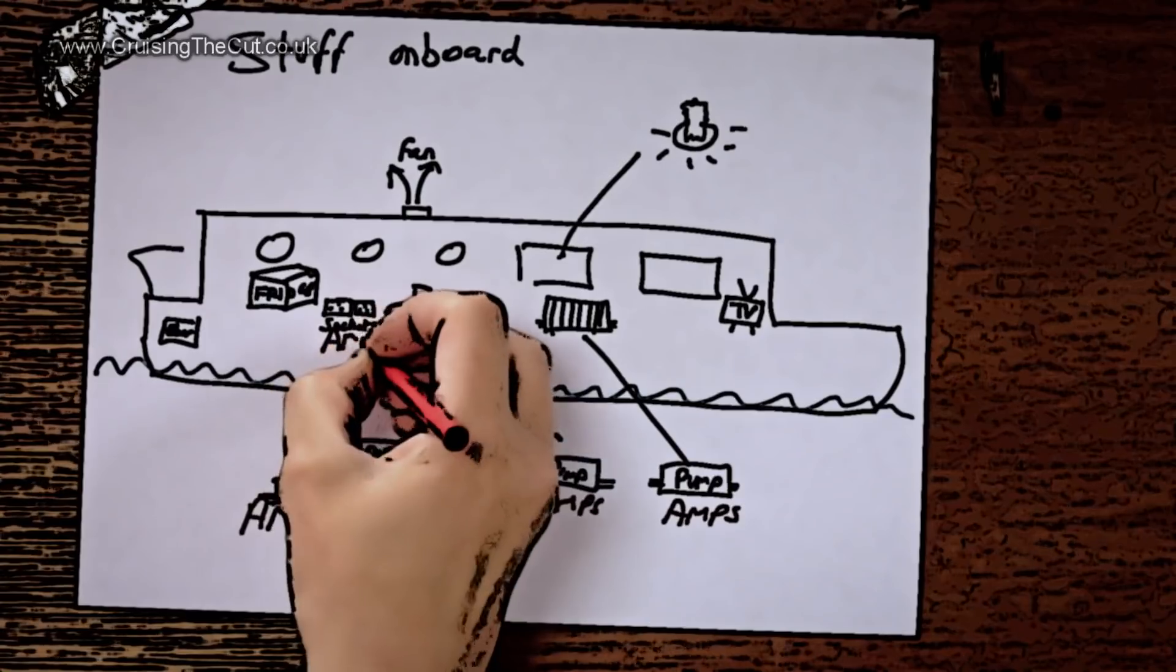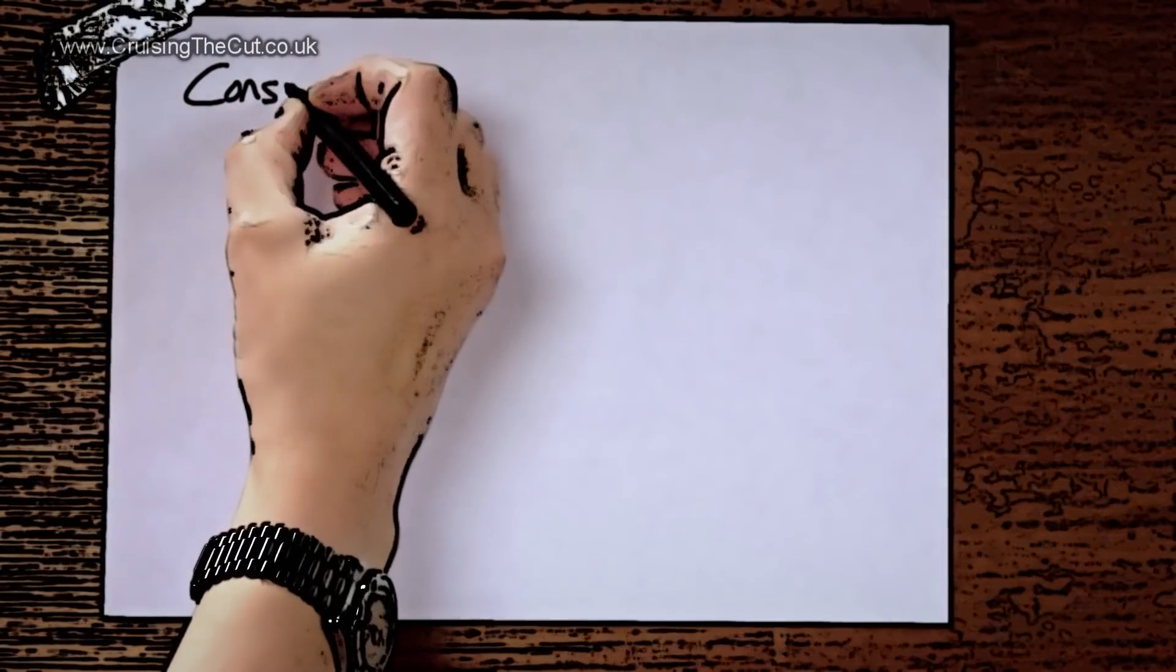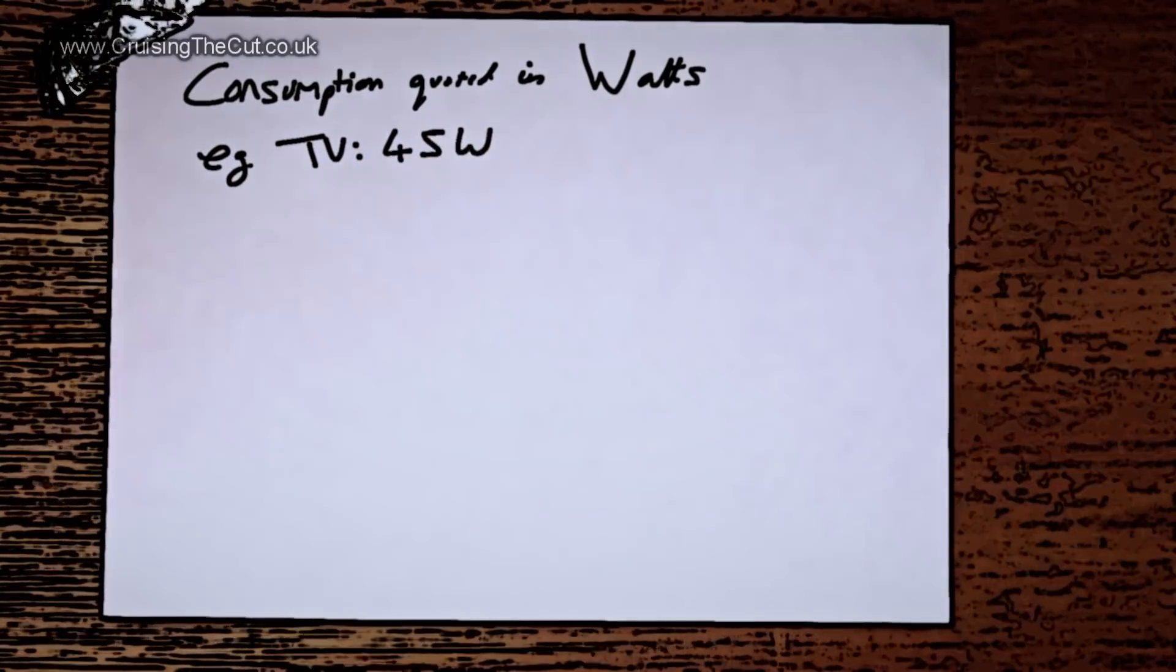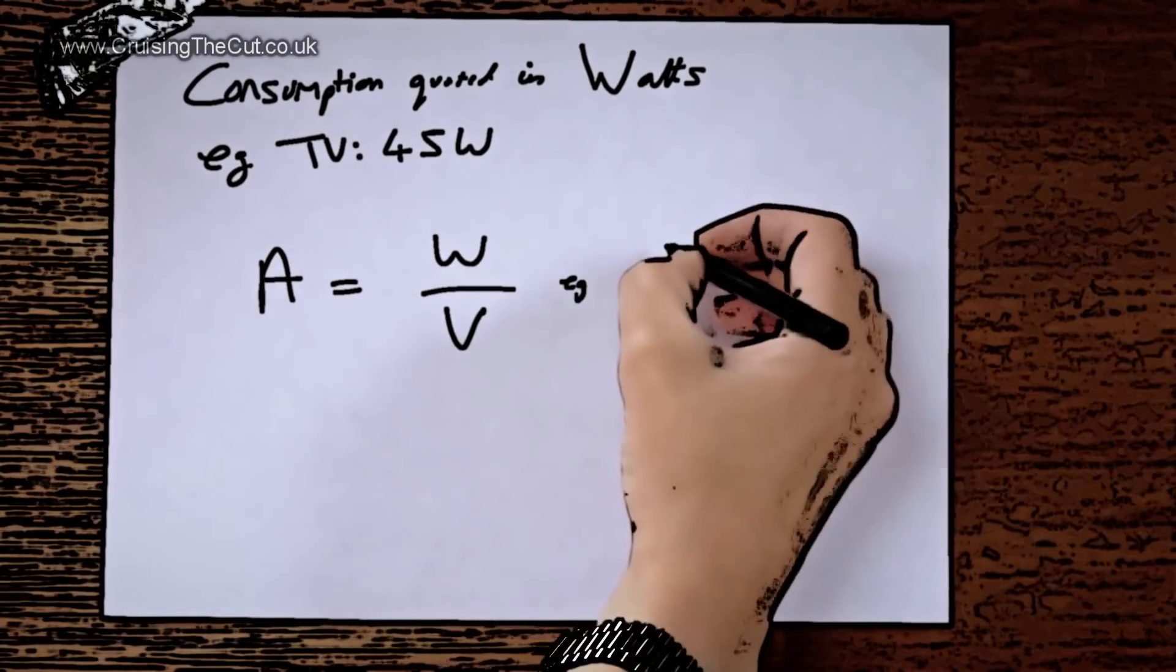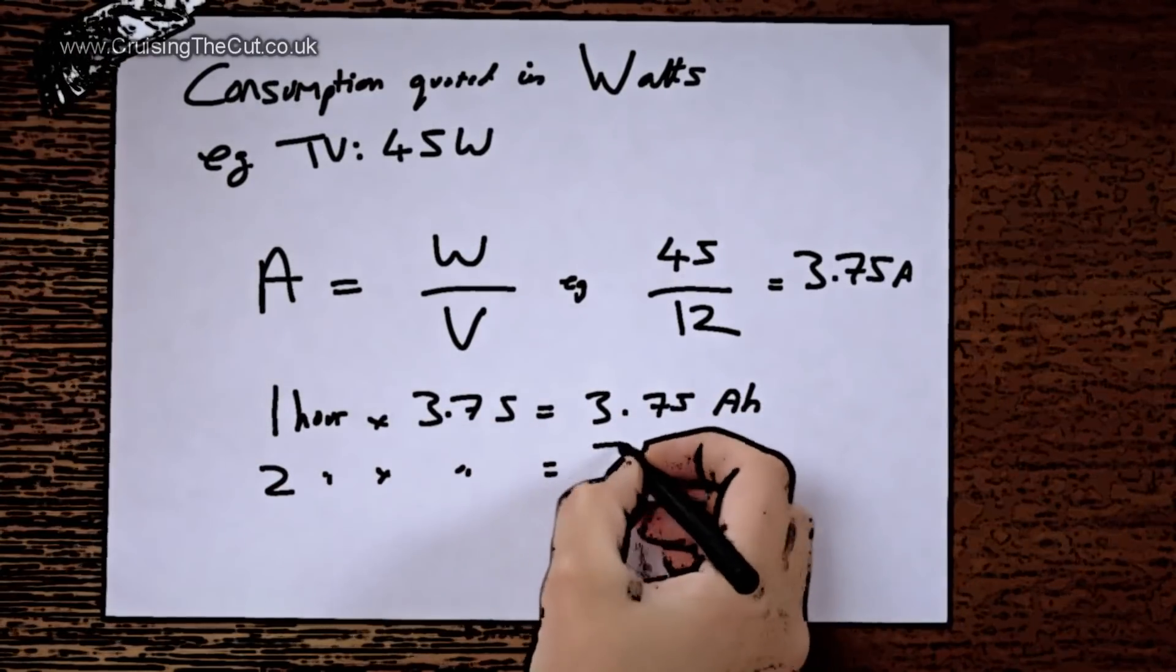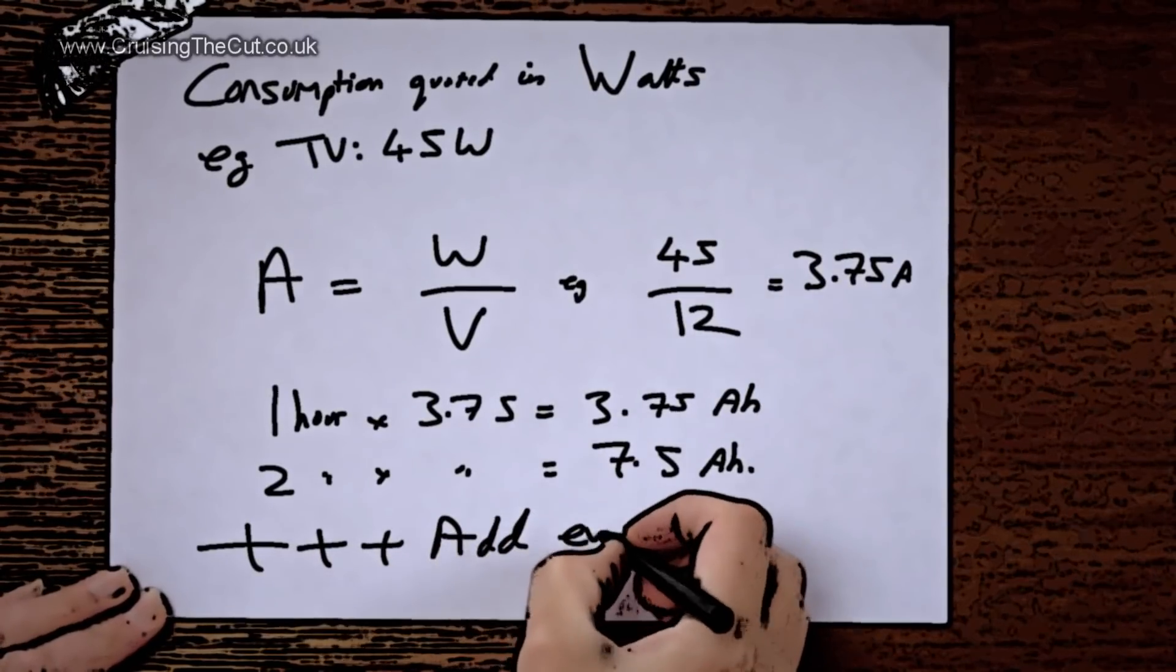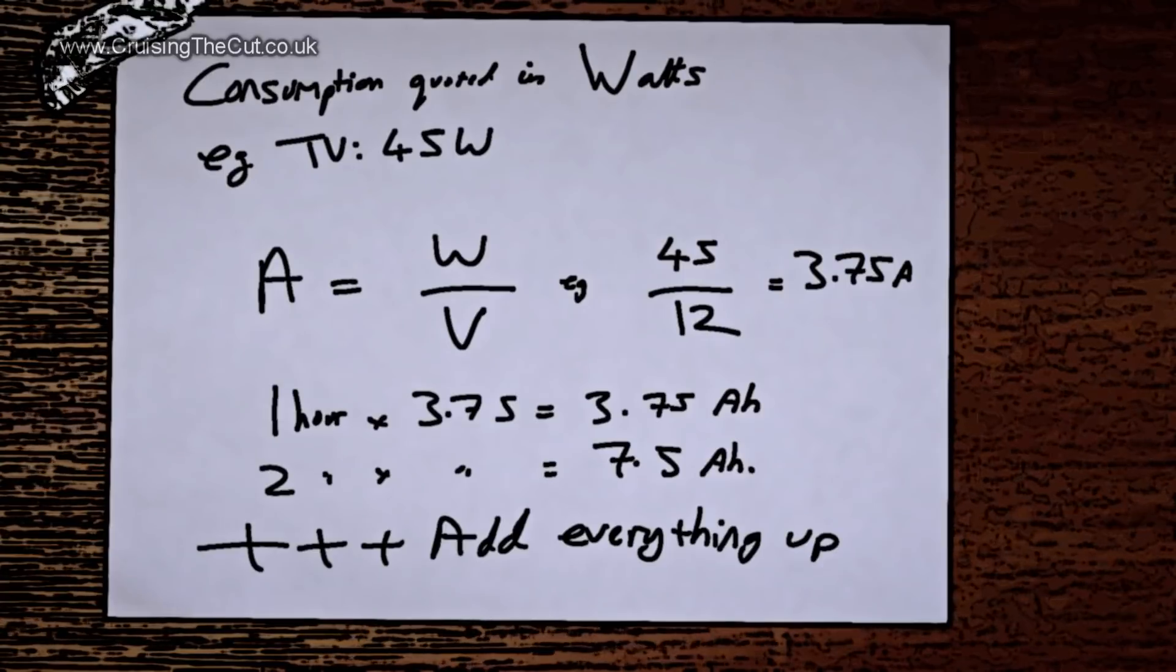Each bit of stuff on the boat requires a certain number of amps to work, so every time you switch something on it's draining your batteries of that much current. Just to make things slightly more annoying, most electrical stuff is rated in watts. My old television, for example, uses 45 watts. To work out how much drain in amps that will put on your batteries, you divide the watts by the voltage of your batteries. 45 watts divided by 12 volts is 3.75 amps. So in one hour of TV watching, my battery will have drained by 3.75 amp hours. Two hours watching would use up twice that - 7.5 amp hours. Knowing what each item on board consumes and for how long you use each thing means you can work out how big your battery bank needs to be before you'll have to recharge it. This is called a power audit and is definitely worth calculating.